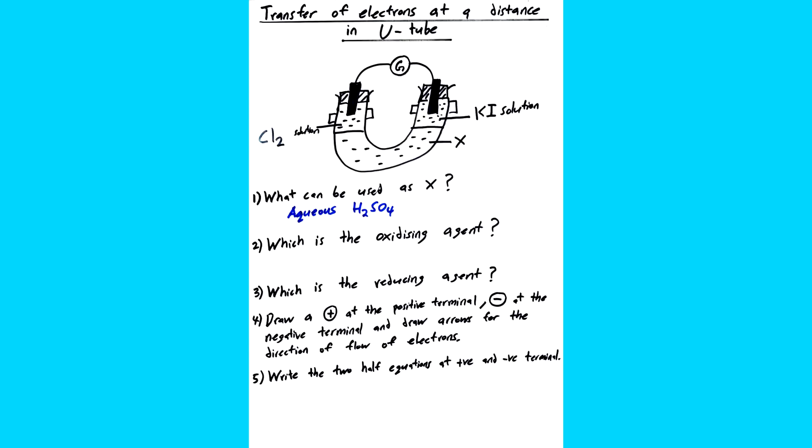Now the second and third question is asking the oxidizing and reducing agent. Fourth question is asking for the positive terminal, the negative terminal and the direction of flow of electrons. And finally, the fifth question is asking us to write down the half equations at both terminals. So for me, I prefer to answer number 5 first before answering 2, 3, 4. This is so that I can immediately see what kind of reaction is going on.